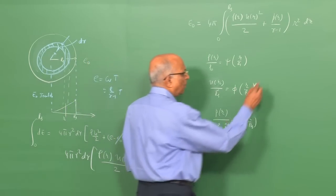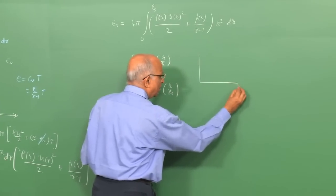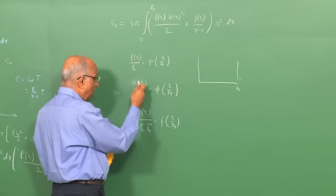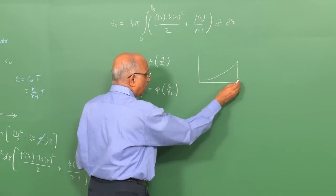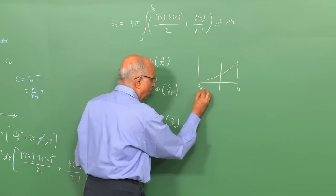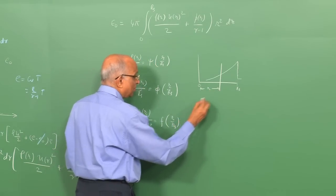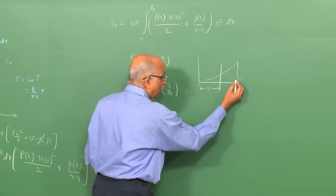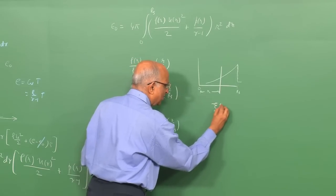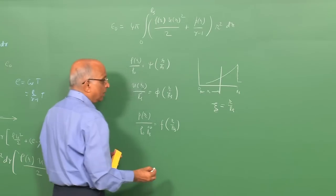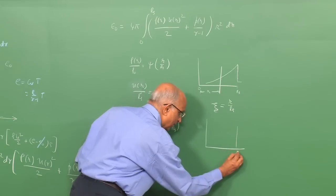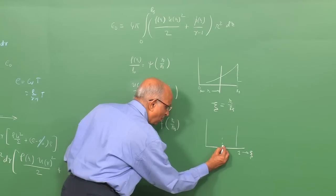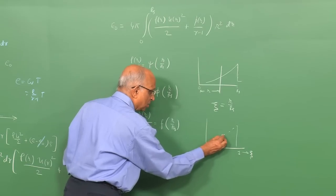We can represent this in a slightly different way. We have Rs, with a step change in density, particle velocity, and pressure at Rs, which then decays from Rs to 0. Introducing the coordinate ζ = R/Rs, the shock is at ζ = 1 and we consider properties at ζ < 1. For a particular Rs, r² = Rs²·ζ², and dr = Rs·dζ, with the limits of integration becoming 0 to 1.